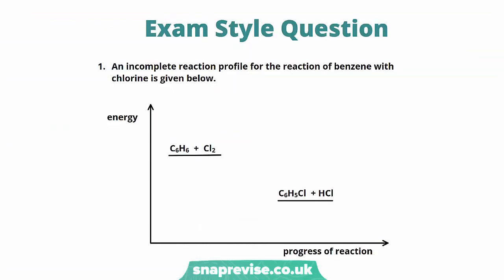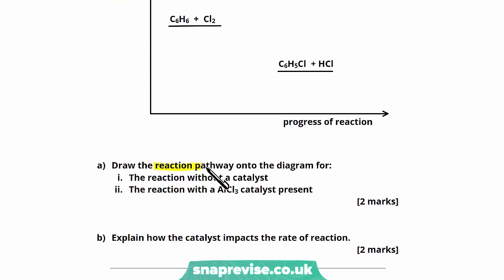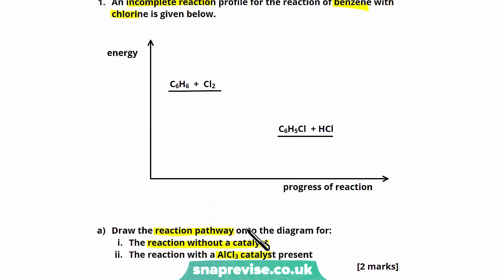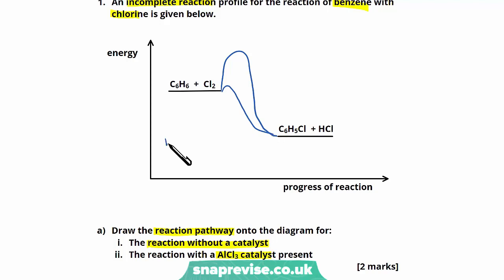An incomplete reaction profile for the reaction of benzene with chlorine is given. Part a asks us to draw the reaction pathway for firstly the reaction without a catalyst, and secondly the reaction with an aluminium chloride catalyst. We draw the curve showing the activation energy without the catalyst, then draw the pathway with the catalyst where the important feature is that the activation energy is lower.